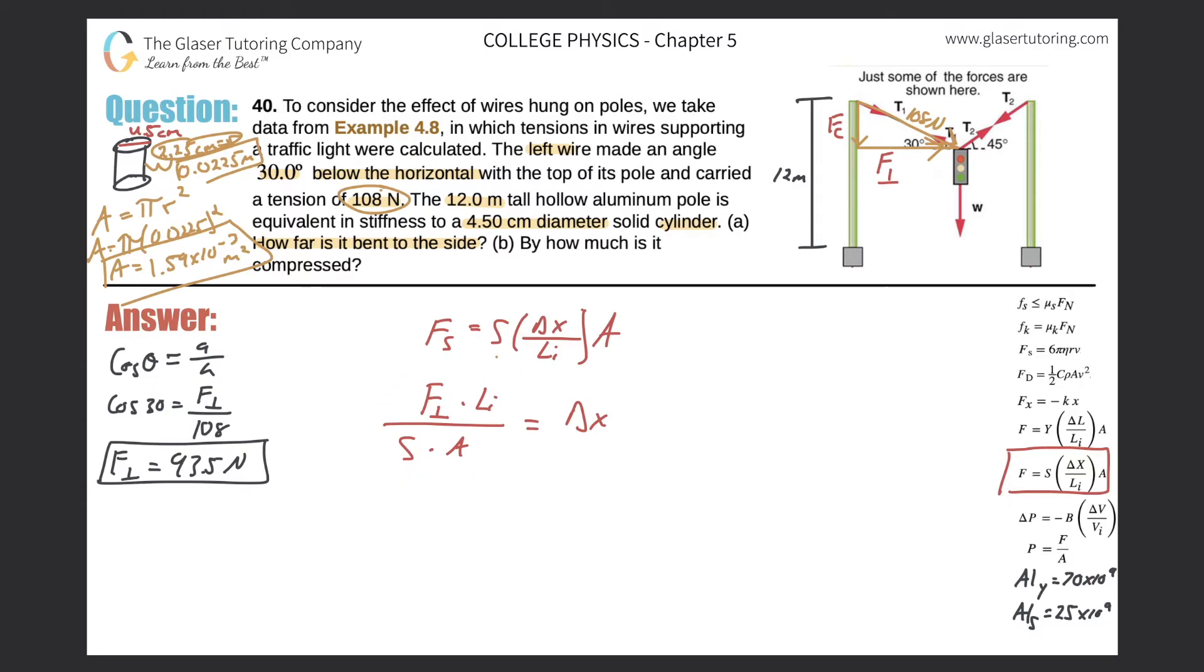So now we got everything we need. Let's plug it all in. The perpendicular force we found to be 93.5 Newtons. The initial length was 12 meters. The shear modulus was 25 times 10 to the ninth. And the cross-sectional area we just found to be 1.59 times 10 to the minus 3. Just plug it on in. So 93.5 times 12 divided by parentheses, 25 times 10 to the 9 times 1.59 times 10 to the minus 3, close parentheses. And we get a value, so it's going to bend by 2.82 times 10 to the minus 5 meters. That's the amount it will bend.